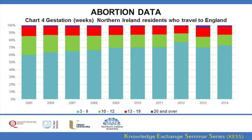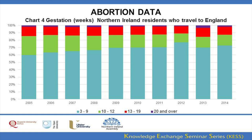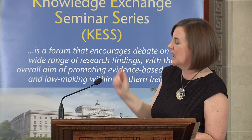The next category focuses on gestation — calculating the time in weeks at which the abortion is carried out. Looking over the 10-year period, abortions within weeks 3 to 9 and those at weeks 10 to 12 together show that 80 to 90% of all abortions carried out on women who travel occur within the first 12 weeks of pregnancy. The remaining categories — 13 to 19 weeks and later gestations — represent a smaller proportion.